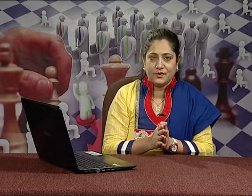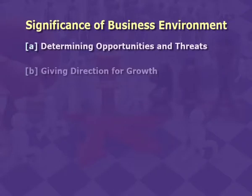Proper understanding of the social, political, legal, and economic environment helps the business in the following ways. First, determining opportunities and threats: the interaction between the business and its environment identifies opportunities for and threats to the business, helping enterprises meet challenges successfully. Second, giving direction for growth: the interaction with the environment leads to opening new frontiers of growth and enables the business to identify areas for growth and expansion.